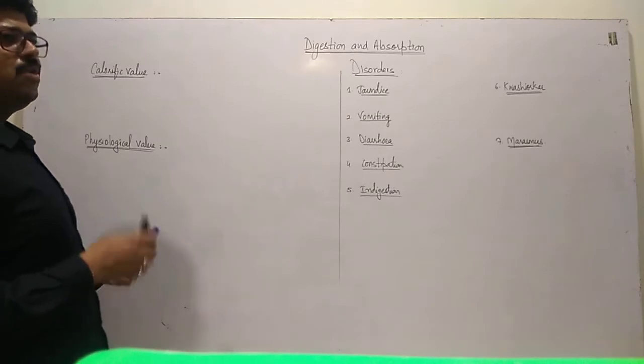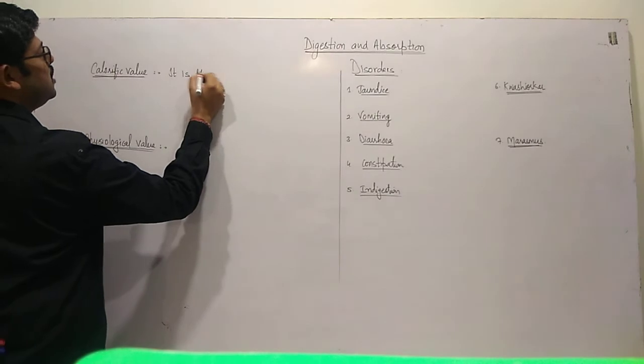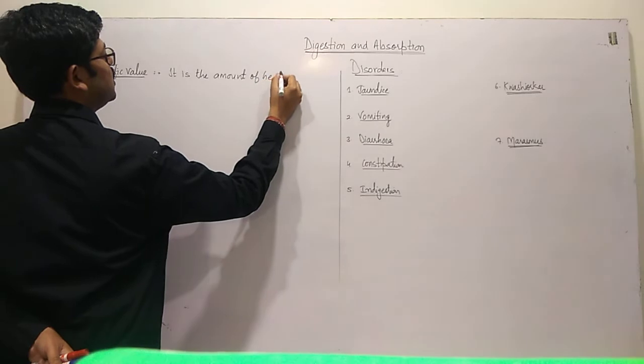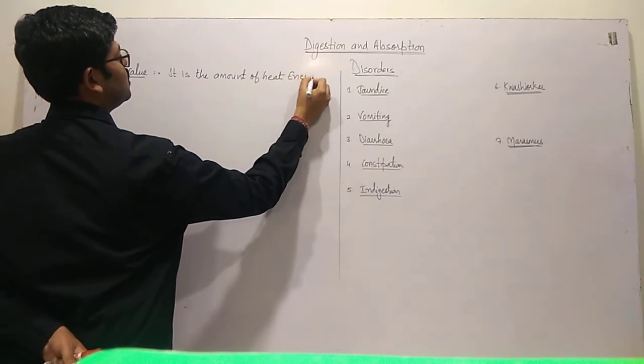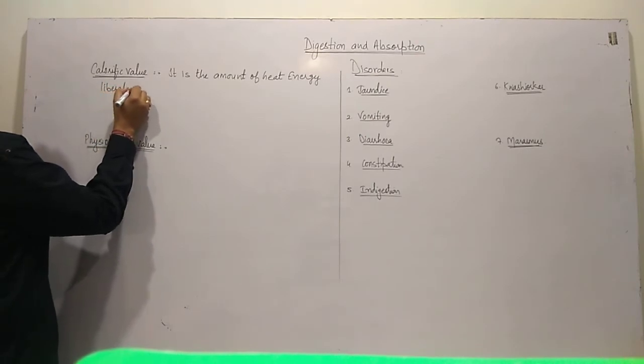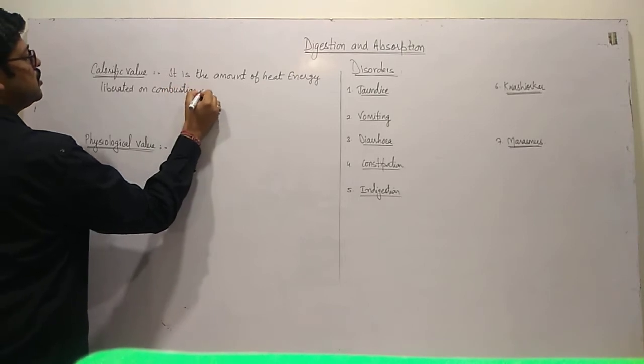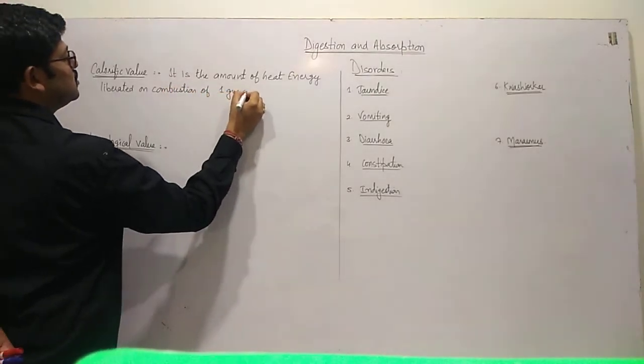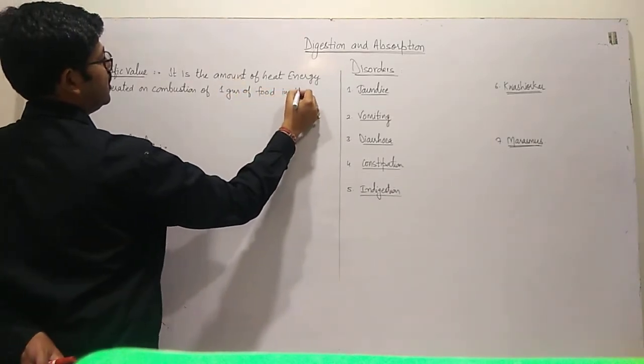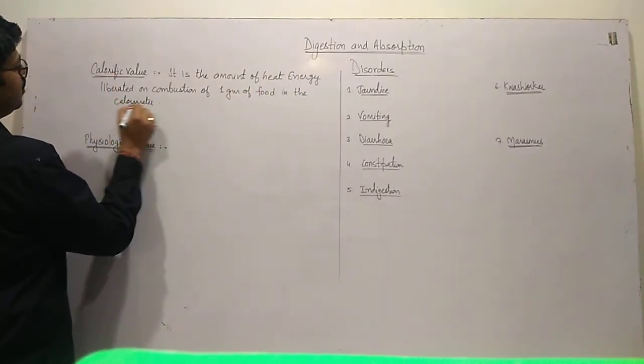First of all, we are going to talk about Calorific Value. Calorific Value is the amount of heat energy liberated on combustion of 1 gram of food in the calorie meter.